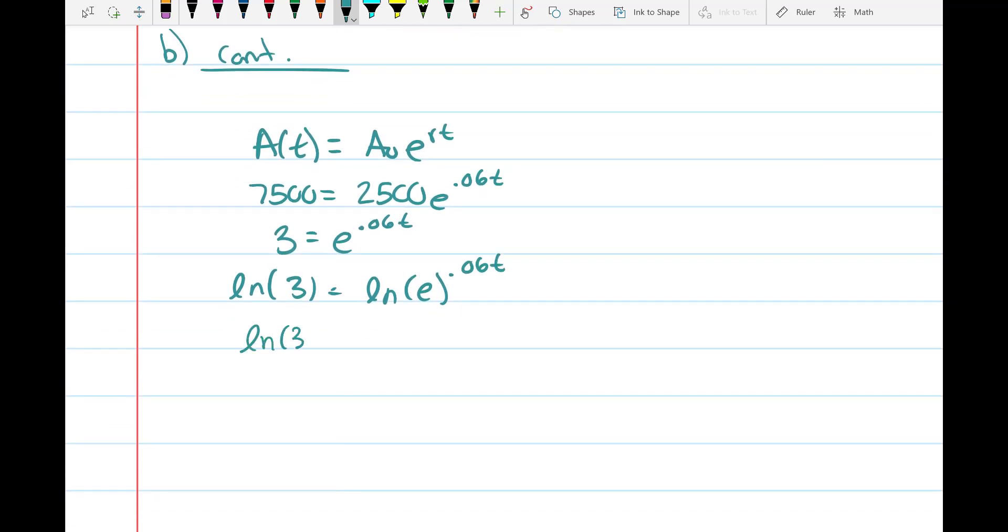For part b, you get ln(3) = 0.06t, because ln of e is 1. So t = ln(3) divided by 0.06, which works out to be about 18.31 years. So compounding continuously will always yield a faster result.